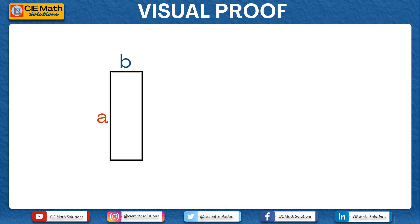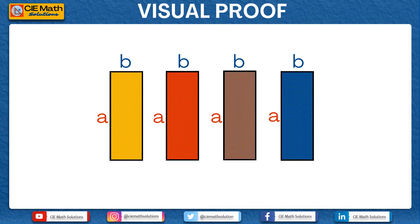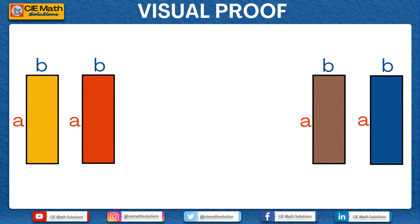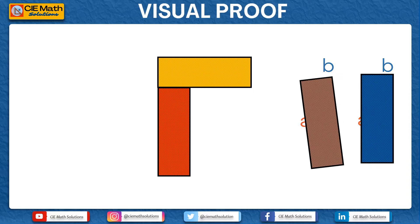We will start the visual proof using a rectangle with sides A and B. Note that A is the longer side and B is the shorter side. Now let us make three more rectangles of the same dimensions. Let us also put a color on each of these rectangles.